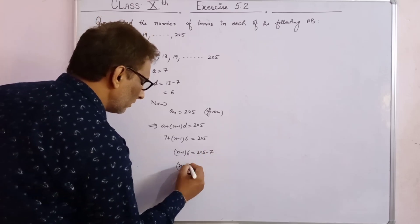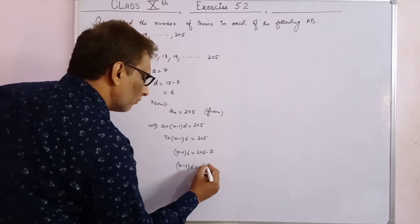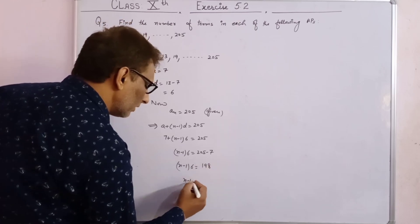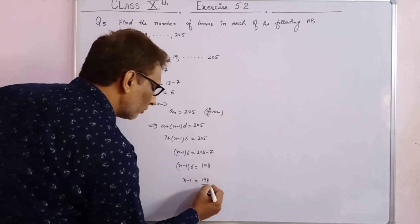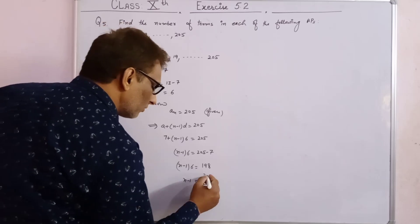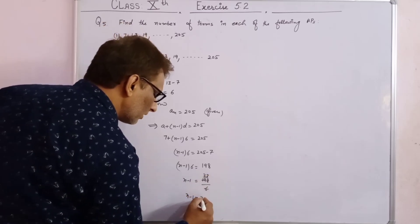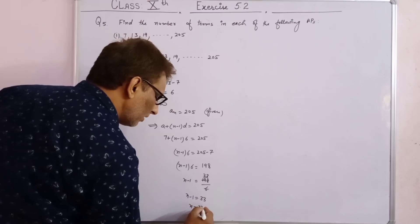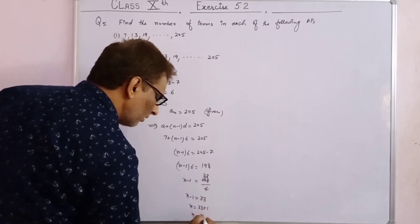(n minus 1) into 6 equals 198. Therefore n minus 1 equals 198 upon 6, which simplifies to 33. So n equals 33 plus 1, giving n equals 34.